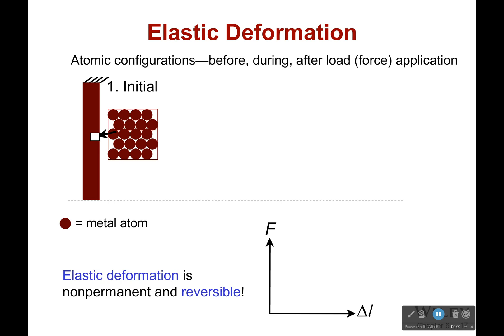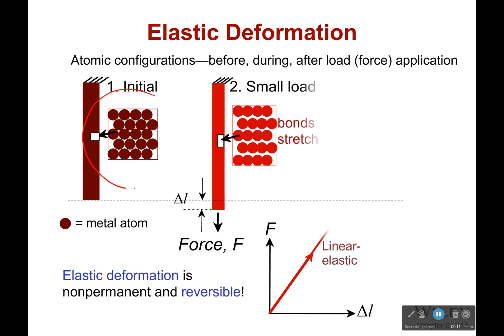Now let's talk a little bit more about that elastic deformation thing — where does it actually come from? Elastic deformation comes from how all those bonds, all those atoms, they're bonded together. When we apply a small load, all those bonds will stretch. The object gets longer under that force, and this is for metal atoms — that's why they're packed like this.